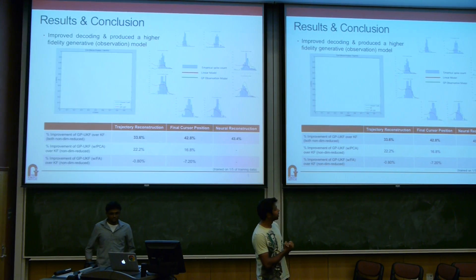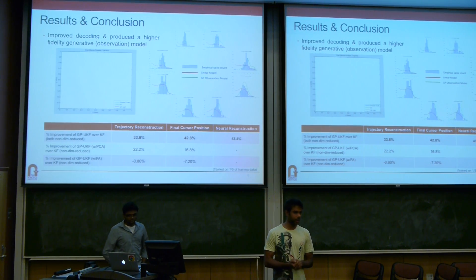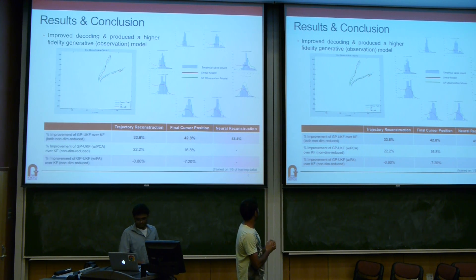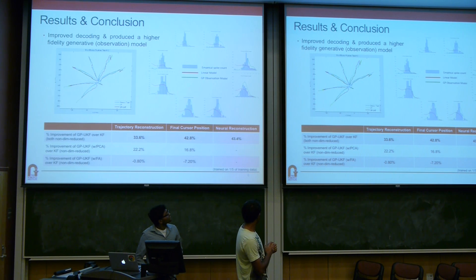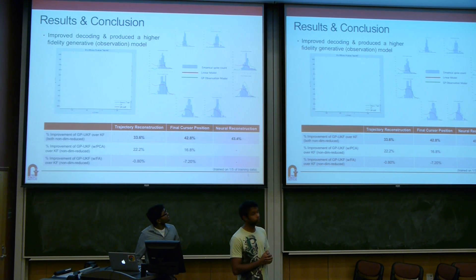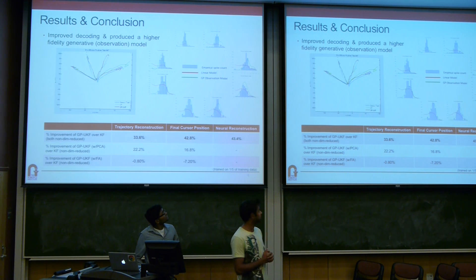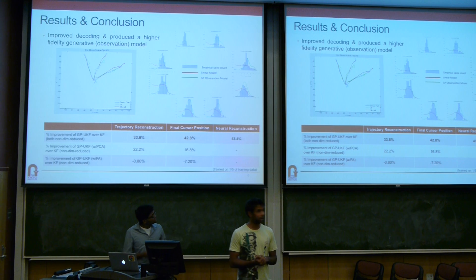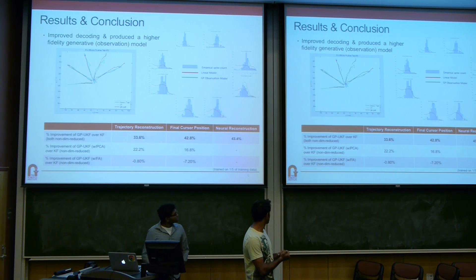So here are some results. The first obvious way to compare is our end goal: better decoding. You can see the video on the left — the green lines are the current state-of-the-art and the red is the GP-UKF. For each trial the GP-UKF tracks the ground truth, shown in blue, much more closely. The RMS improvement in error is about 33% over the state-of-the-art Kalman filter, and we get a 42% improvement in the final cursor position as well.